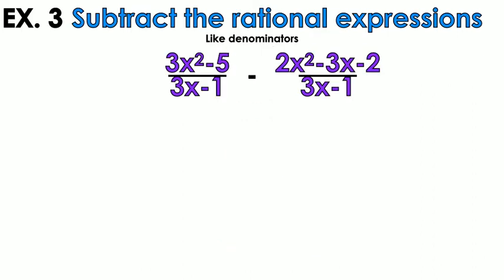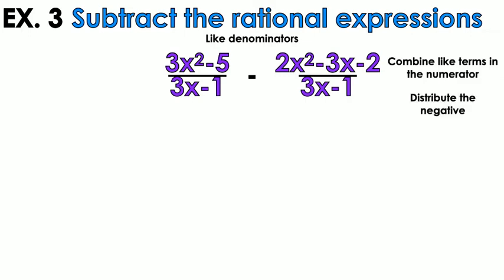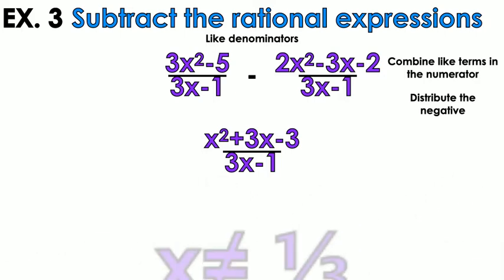Example number three — like denominators again. All you have to do is combine like terms in the numerator, but pay attention to that negative in the middle. When you're subtracting polynomials, distribute that negative. So 3x squared minus 2x squared gives 1x squared. Then distribute the negative to negative 3x — that's positive 3x. And negative 5 minus negative 2 is negative 3. Then define your domain.